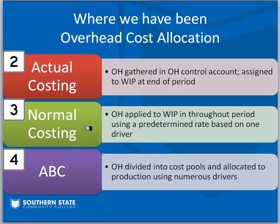The problem with normal costing was that we're only using one cost driver — we had this big pool of overhead and we assigned it to all our products using one driver. So in chapter four we talked about ABC, or activity-based costing, where we had many different pools of overhead and used numerous drivers to allocate to our products. It's important to keep in mind that in both chapter three and four you're still making an overhead rate — in chapter three we called it a predetermined or budgeted rate, and in chapter four we called it an activity pool rate.